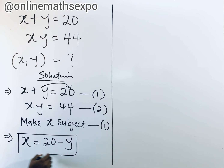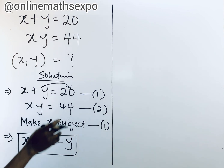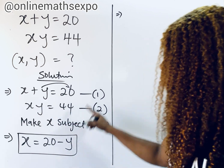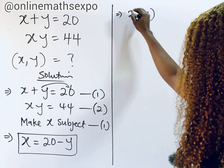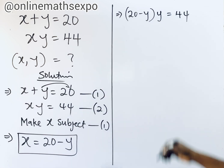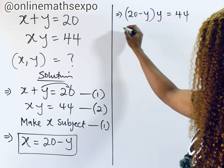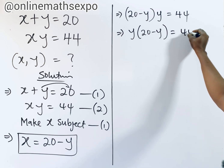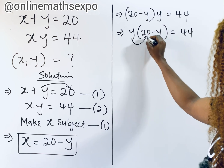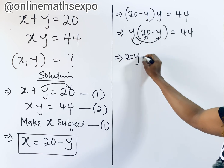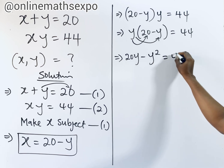So we're going to put this value of x into the second equation. Remember, we made it the subject in the first, so you substitute in the second one. This gives us: 20 minus y, multiplied by y, is equal to 44. This is also written as y times (20 minus y) equals 44. Distributing y inside gives us 20y minus y squared equals 44.